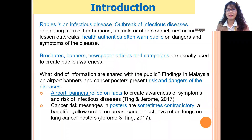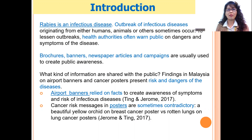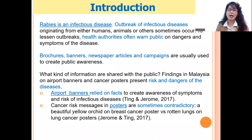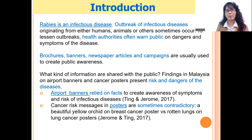My study is on the newspaper trail of an infectious disease — rabies. Rabies normally infects dogs but can also spread to human beings. Thus far, the Ministry of Education and Ministry of Health usually use brochures, banners, newspaper articles, and campaigns to educate the public and create public awareness. But what kinds of information are shared with the public?